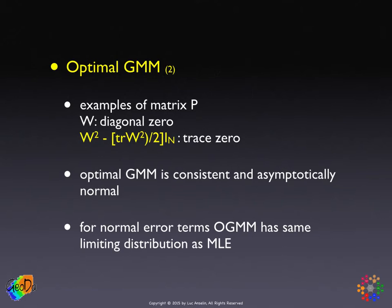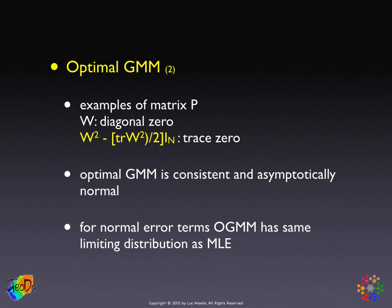There are other matrices that satisfy the requirement that the trace is zero. The solutions of these equations yield the so-called optimal generalized methods of moments, which is consistent and asymptotically normal. Lee shows in the paper that for normal error terms, this optimal GMM has the same limiting distribution as maximum likelihood.